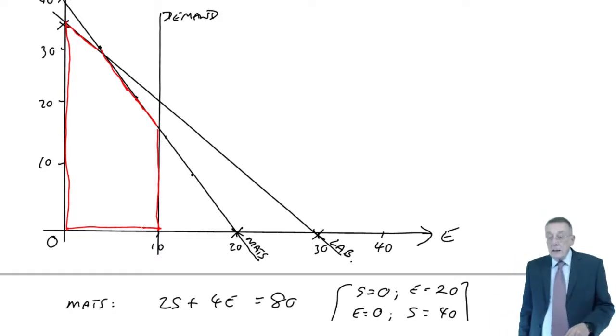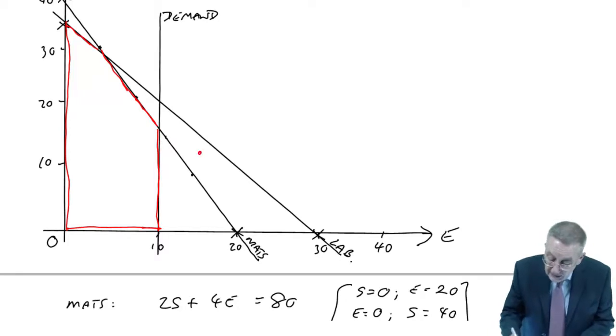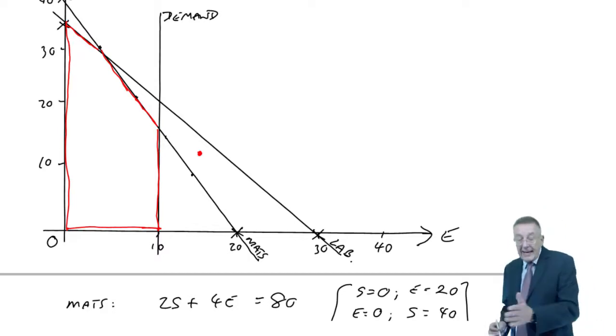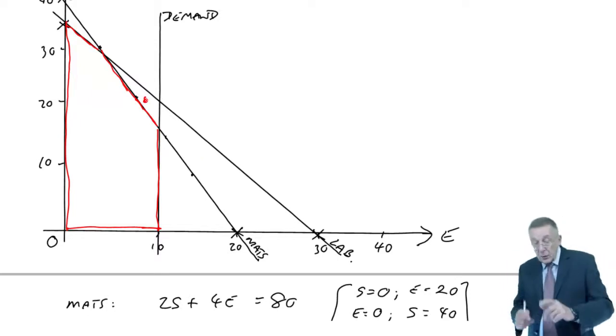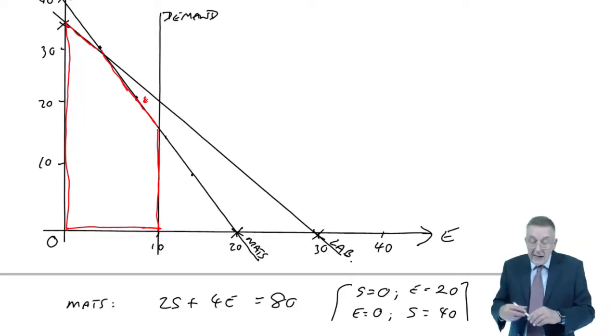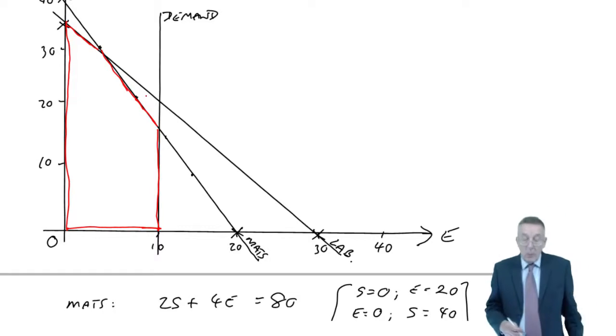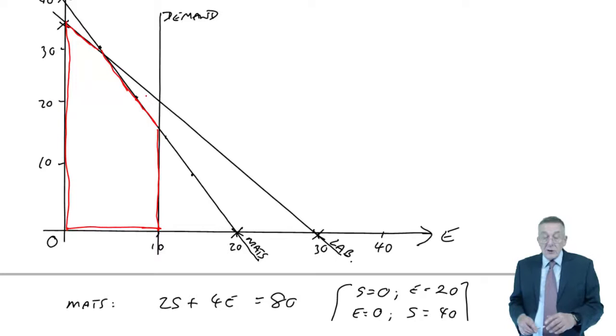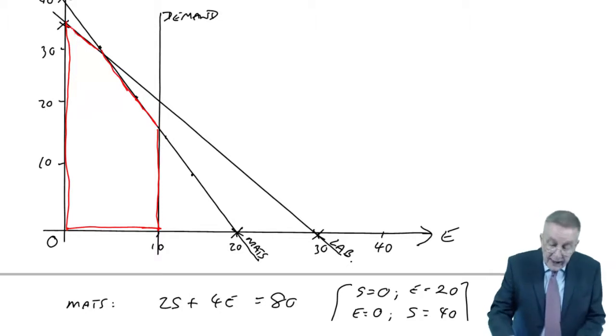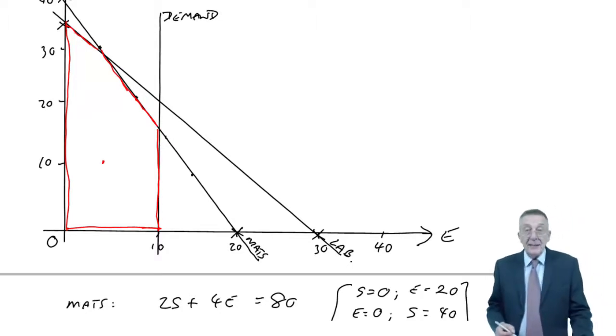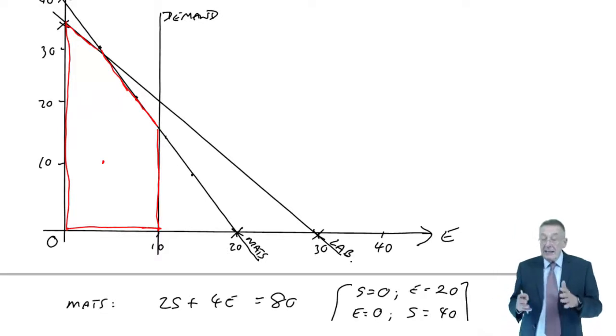And see why? You see, we can't be here. Because although we're below the labour line, we'd be breaking the materials line, the demand line. It wouldn't work if we were here. Okay, we're less than demand. That's okay. We're less than labour. That's okay. But we're breaking the materials line. It wouldn't work. To satisfy all of the constraints, whatever answer we end up with, must be either on the edge of or inside that area I've coloured in red.